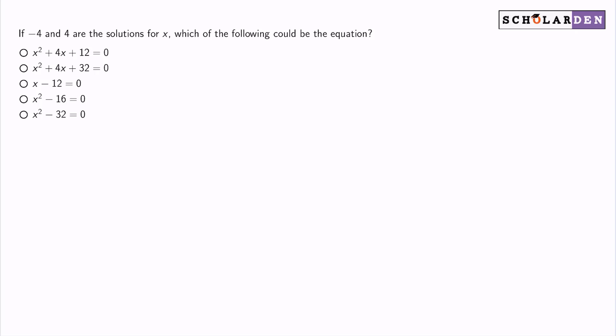If negative 4 and 4 are the solutions for x, which of the following could be the equation? The answer is D, x squared minus 16 equals 0.